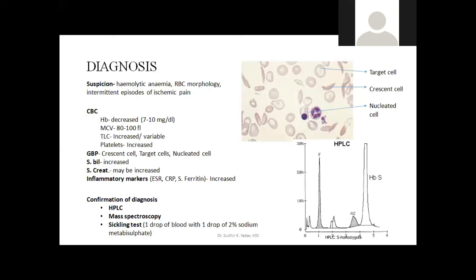The leukocyte count is increased because sickle cell disease is a pro-inflammatory condition. It is a systemic inflammatory condition because micro-embolism and micro-infarction are occurring all the time throughout the patient's body. This leads to the release of inflammatory markers. Inflammatory markers such as ESR, C-reactive protein (CRP) will also be raised in this condition.